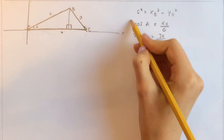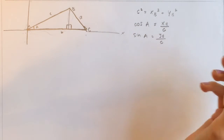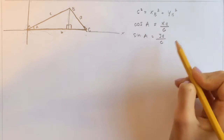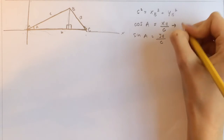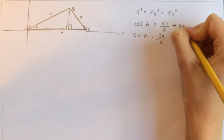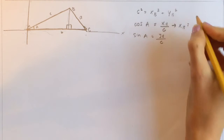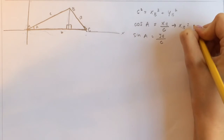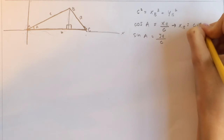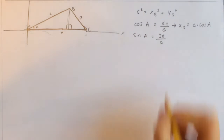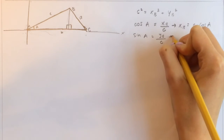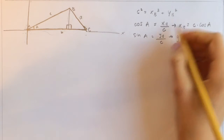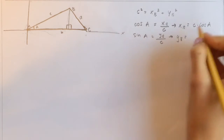Now that we have these two things, let's isolate x of B and y of B. We know that x of B equals c times cosine of A, and we know that y of B equals c times sine of A.